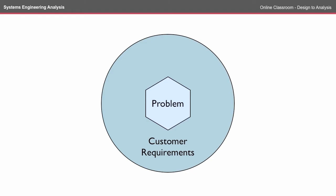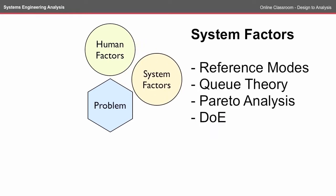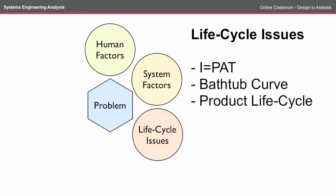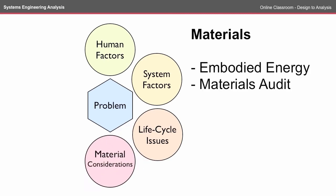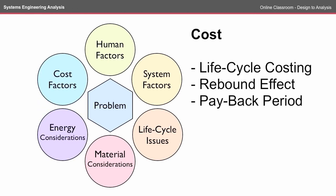In the previous series of online classrooms we looked at the problem from a customer requirements perspective. Now that we're looking at an analysis perspective, we'll be looking at it from a number of different factors: the first being human factors, then we'll look at some of the system factors, some life cycle issues, a materials perspective, an energy perspective, and finally an economic perspective.